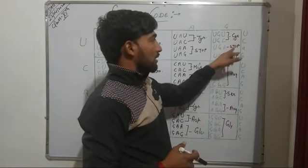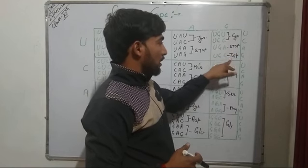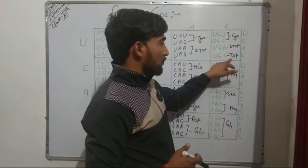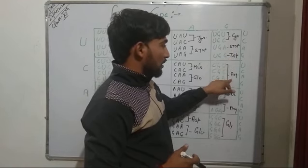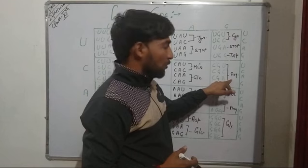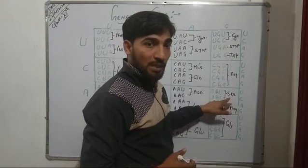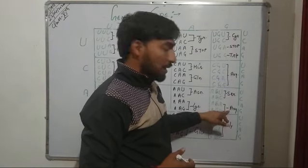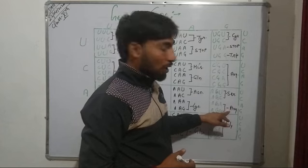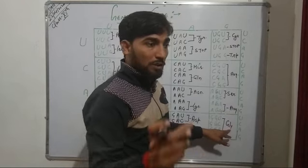Here we have CYS for cysteine. Again, we have the stop codon. Then TRP for tryptophan. Again, ARG for arginine. We have SER for serine. Again, ARG for arginine. And GLY for glycine. These are the short terms for all the amino acids.